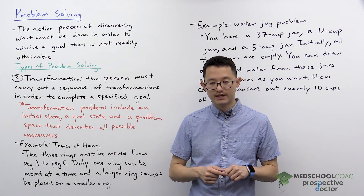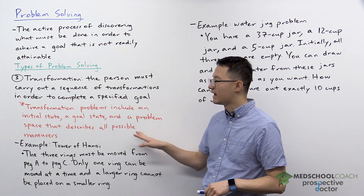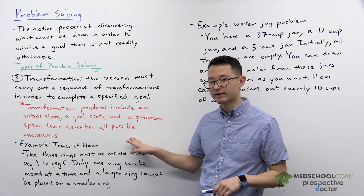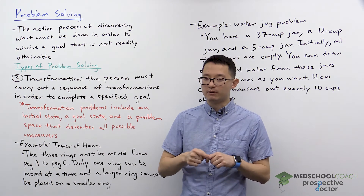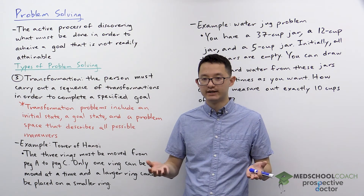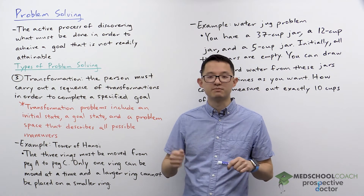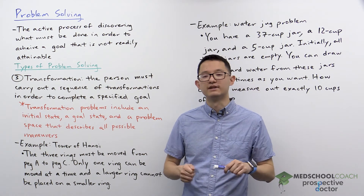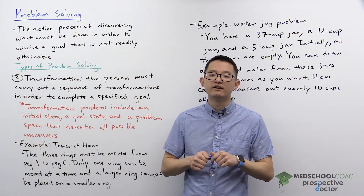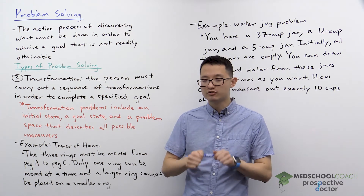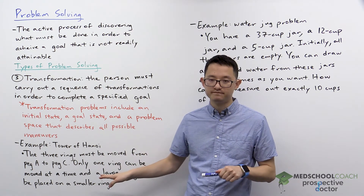These possible maneuvers that we can carry out represent the problem space. So now you should have a better understanding of these three terms and how they're applied to problems of transformation. You can also take a look at the Tower of Hanoi problem and perhaps try to solve it yourself. In this video, we're not going to show you the solution, because we're going to do that in a subsequent video where we show how you can use a particular approach to problem solving to solve this type of problem.